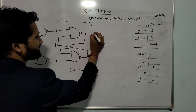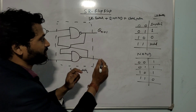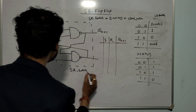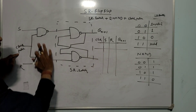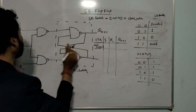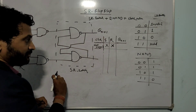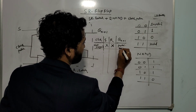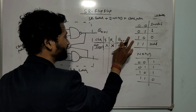Coming to the SR flip-flop — let this output be Q(N+1). The inputs are S and R, and the output is Q(N+1). One important thing is the clock pulse. If there is no clock pulse, it will not work — the previous bit will be stored at the output side. That flip-flop will not work; the previous data will be stored.